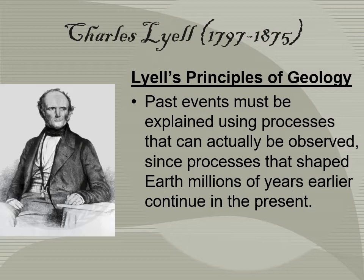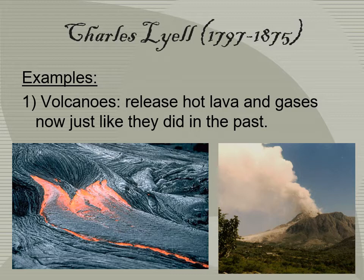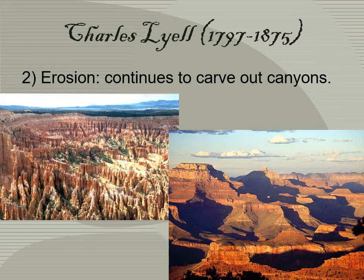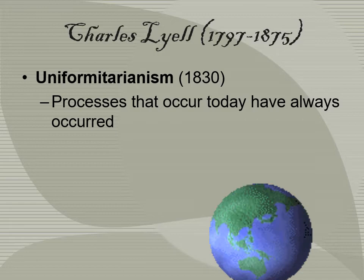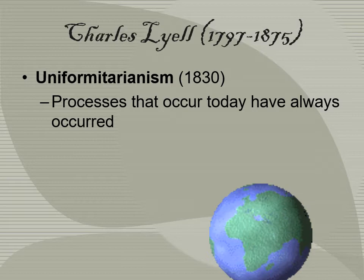Charles Lyell had a principle of geology which says that past events must be explained by using processes that can be observed today. Since processes shaped the earth millions of years earlier and continue in the present — for example, volcanoes release hot lava and gases now just like they did in the past, and erosion continues to carve out caverns and canyons — this is called uniformitarianism: processes that occur today have always occurred, such as the water cycle.